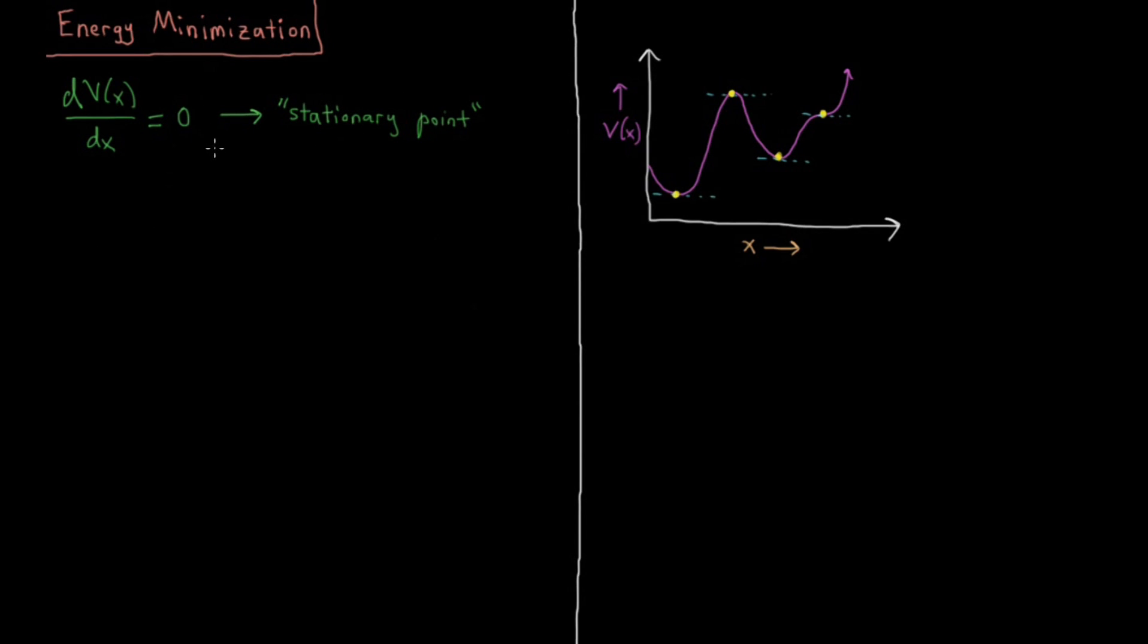What kind of stationary points can we have on this surface? Every point labeled here is a stationary point where the first derivative is zero. We would determine the type based on the value of the second derivative. If d²V/dx² is greater than zero, then that would be called a local minimum.